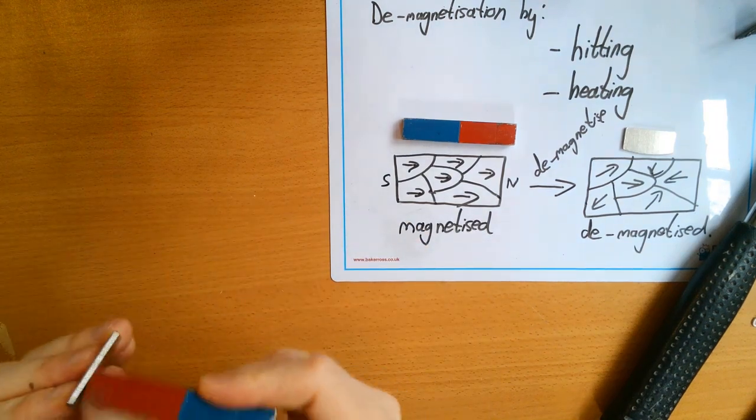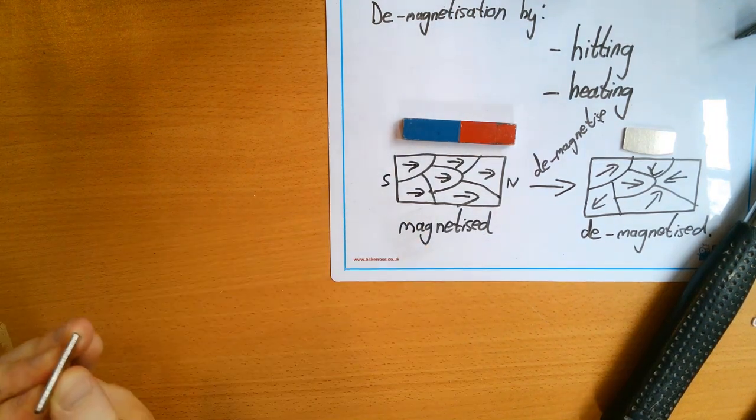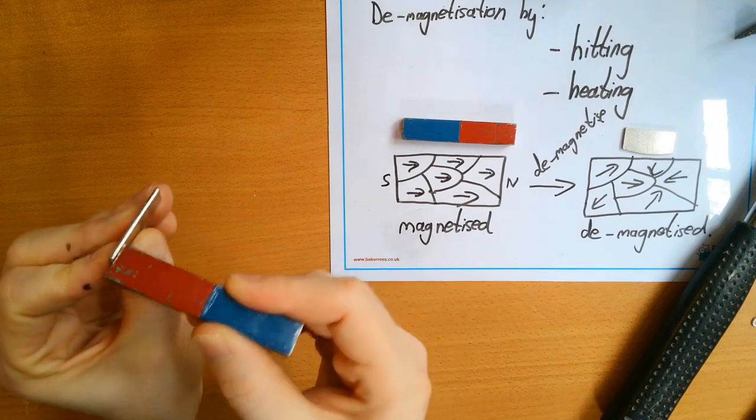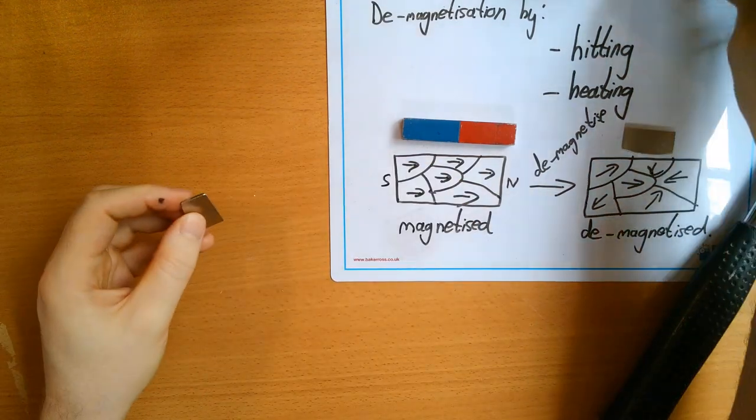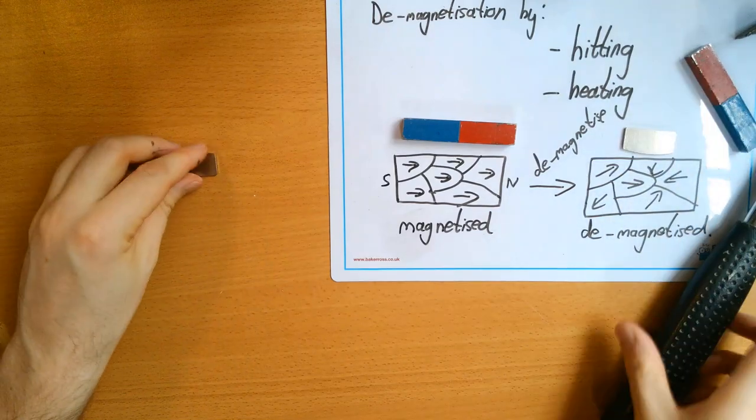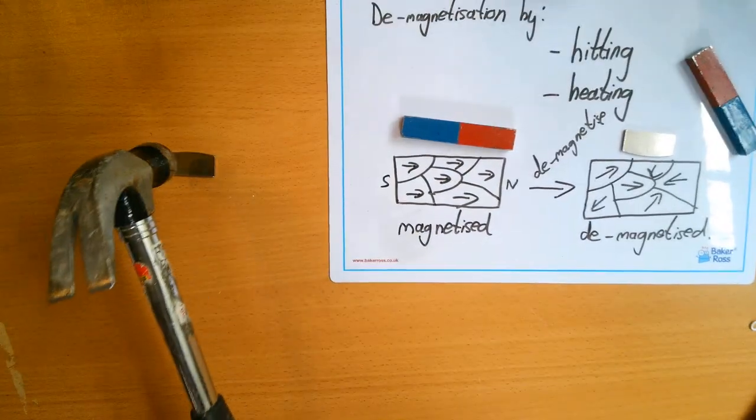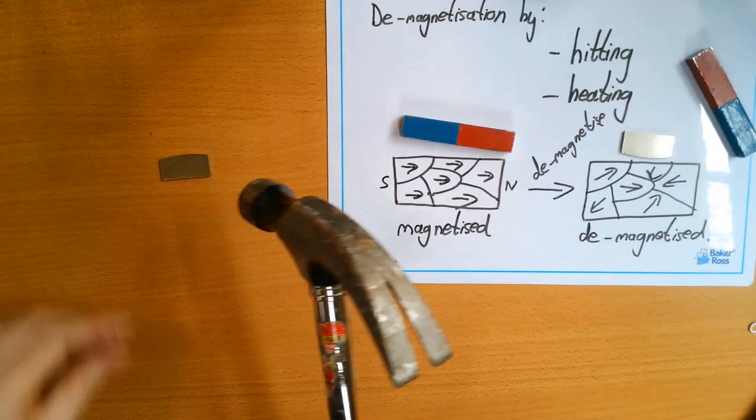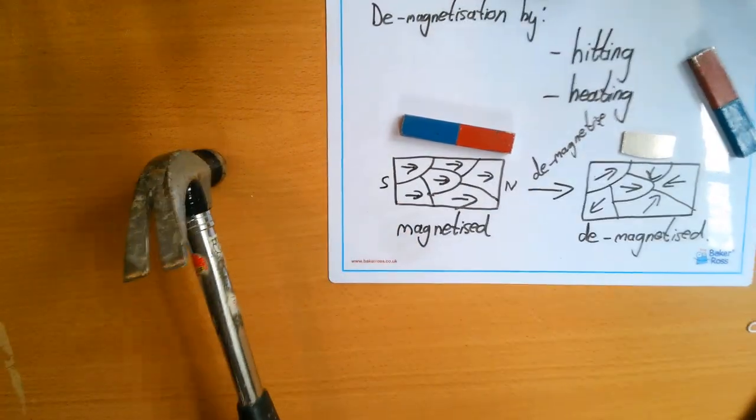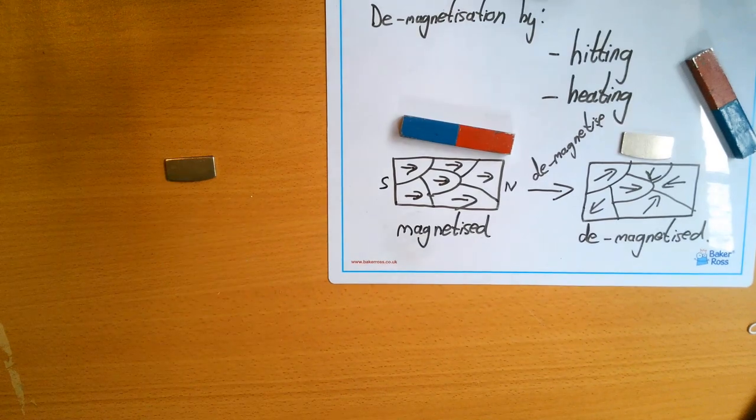If I do this, you'll see it a bit better. To cause some magnetization. And I put it there, I can demagnetize it by hitting it with the hammer.